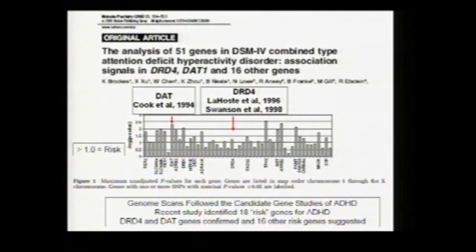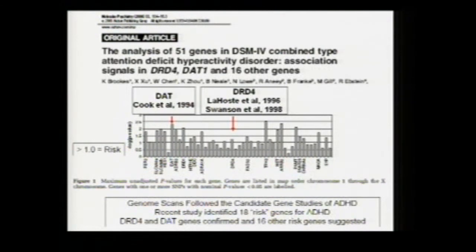To summarize the genetic work: over 10 years ago, two genes were identified as associated with ADHD. The dopamine transporter gene has a VNTR — a variable number of tandem repeats in a 10 base pair sequence that repeats either 9 or 10 times. Those with the 10-10 genotype may be at risk for ADHD. This was discovered by Ed Cook at the University of Chicago in 1994.